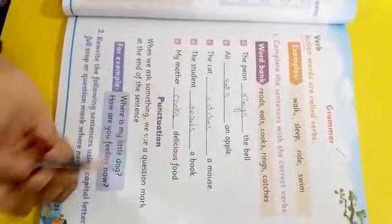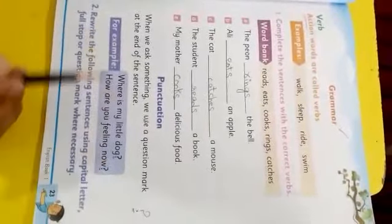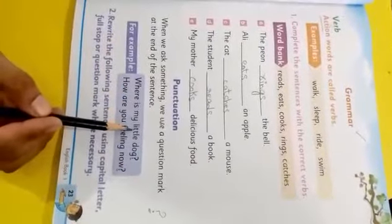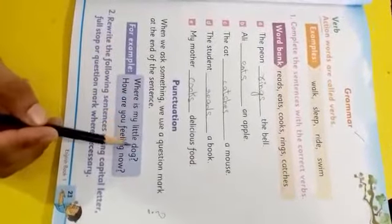When we ask something, we use a question mark at the end of the sentence. All of you know, when we ask something, it's a question mark we put at the end of the sentence. Jab hum koi sawal karte hain, toh uske end mein hum question mark lagate hain. This is the question mark. We put question mark at the end of the sentence. For example: Where is my little dog? So it's a question, so we put question mark at the end of the sentence. How are you feeling now?